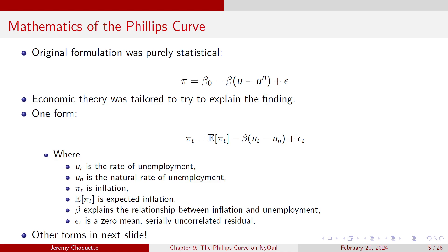Here's a statistical formulation of it. That beta is the relationship between inflation and unemployment — deviations of actual unemployment from the natural rate. And that epsilon is the zero-mean serially uncorrelated residual, similar to what we learned when studying vector autoregressions.